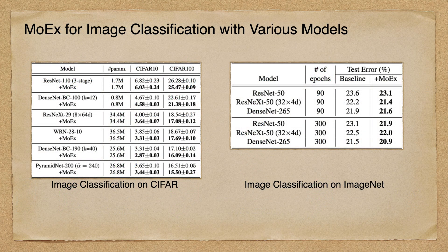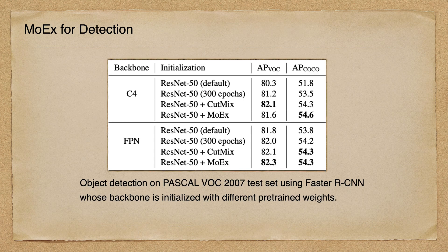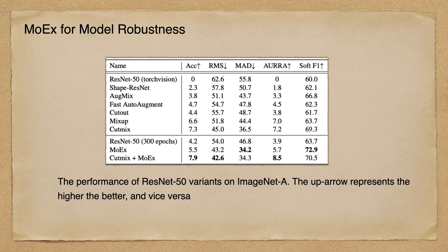First, MOX is able to help boost model performance with various architectures. Second, MOX could be compatible with existing data augmentation methods and achieve the best performance. We also find that a pre-trained classification model with MOX could be used to initialize an object detection model with higher performance. Additionally, MOX shows its edge in terms of model robustness.